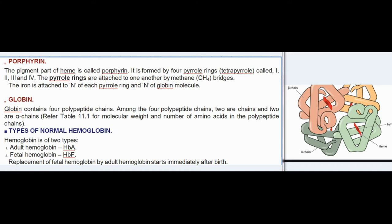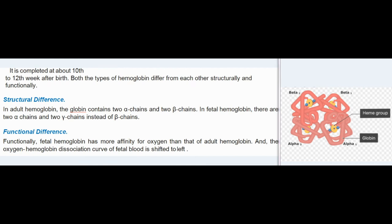Globin contains four polypeptide chains; among the four, two are beta chains and two are alpha chains. Types of normal hemoglobin: hemoglobin is of two types — adult hemoglobin (HbA) and fetal hemoglobin (HbF). Replacement of fetal hemoglobin by adult hemoglobin starts immediately after birth and is completed at about the 10th to 12th week after birth.